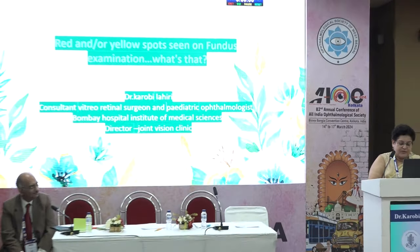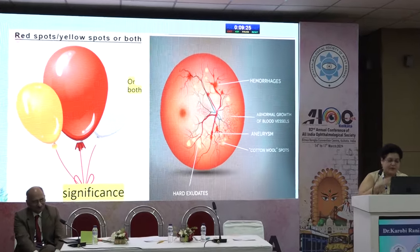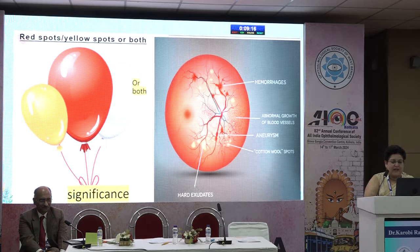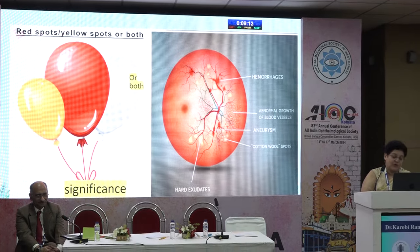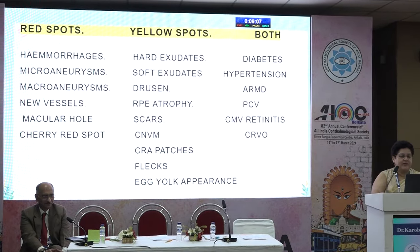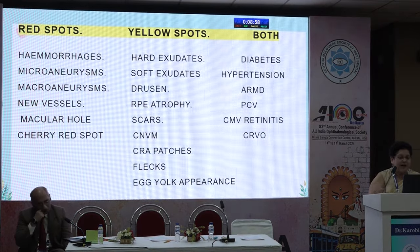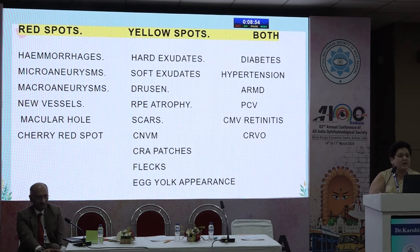Thank you Paritosh. Good evening everyone. I am going to speak about red or yellow spots seen on fundus examination. Almost everything in the retina that you see — pre-retinal, intra-retinal, sub-retinal — is yellow or red; occasionally black, brown or white. Red spots include hemorrhages, microaneurysms, macroaneurysms, new vessels, macular hole, and cherry red spot. Yellow spots include hard exudates, soft exudates, drusen, RP atrophies, scars, CNVM, CRA patches, flecks, and egg yolk appearance. Conditions giving both include diabetes, hypertension, age-related macular degeneration, PCV, CMV retinitis, and CRVO.